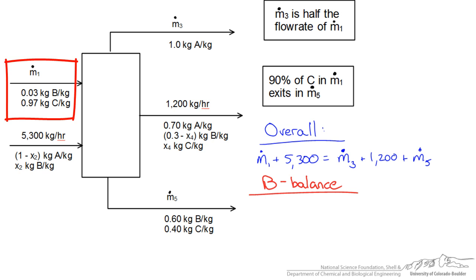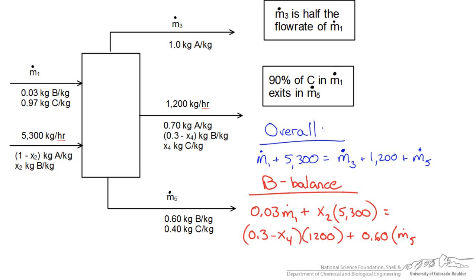So we could do the same thing for stream 2, but in this case we are using X2 as our unknown, but multiplying it by a known mass flow rate. So that will account for the B in the second stream. This has to equal no B in stream 3, we have 0.3 minus X4, that's times 1200 plus 0.60 times M5. And that should account for all of our B entering and exiting this process.